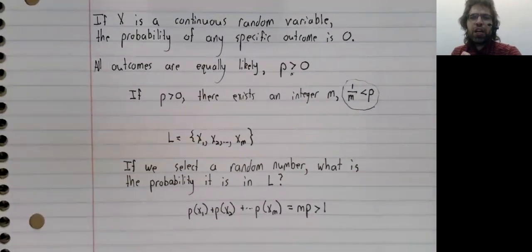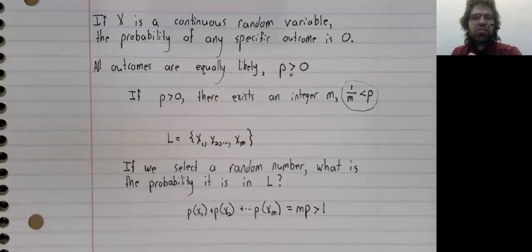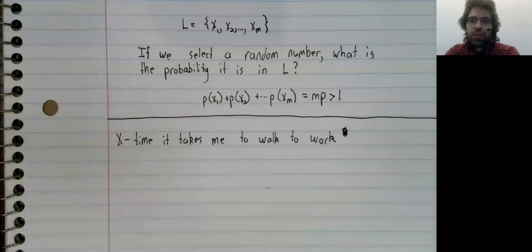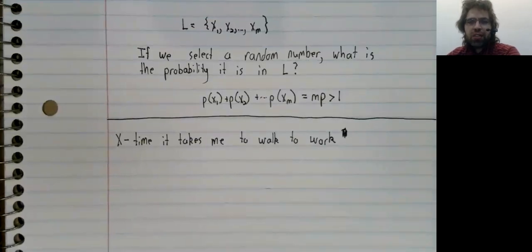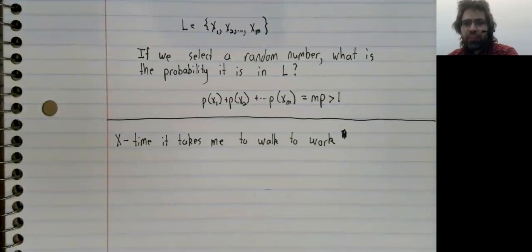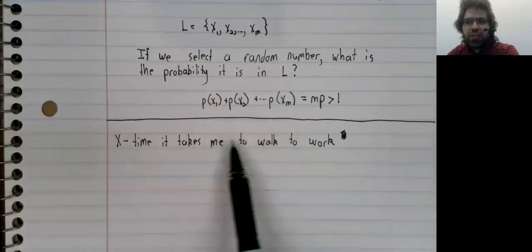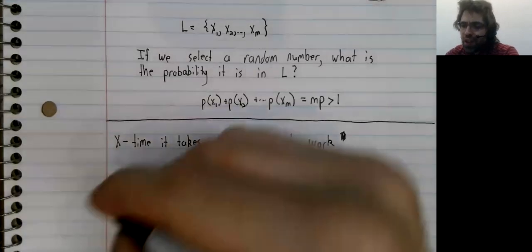Now that might seem very unintuitive, but let's see how it works in a real world situation. Every morning I walk to work, and the exact amount of time that takes varies from morning to morning. Let's view this as a continuous random variable.